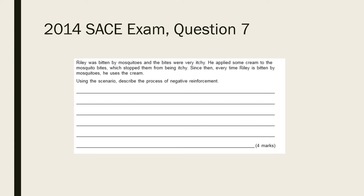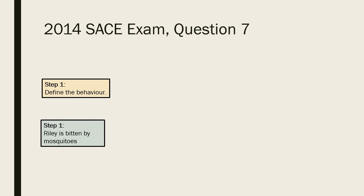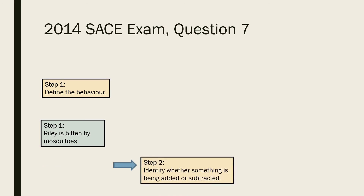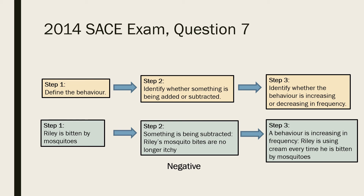Let's look at one more example before we move on to schedules of reinforcement. The antecedent behaviour in this scenario is that Riley is being bitten by mosquitoes. Using the cream removes the unpleasant stimulus — the itching — which subsequently increases the frequency of the behaviour of using the cream, as Riley uses it every time he is bitten. Hence, this is an example of negative reinforcement.